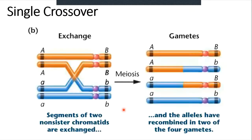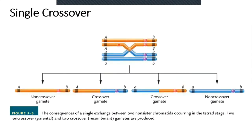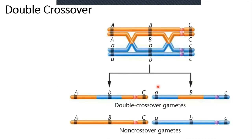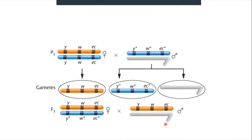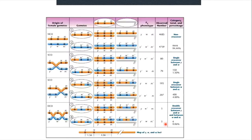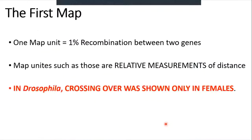Single crossing over: if crossing over happens between two sister chromatids, they exchange their parts and we get new combinations after meiosis. Two sister chromatids never participate in crossing over, but the other two do. There is also another possibility: double crossing over. Sometimes double crossing over is possible too, and after double crossing over, many more different combinations can form.